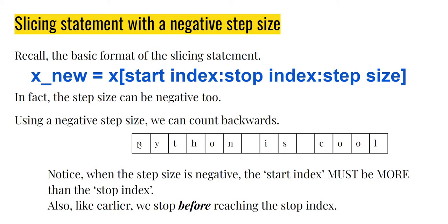The reason start must be greater than stop is because we are starting here and going backwards. For example, with indices zero through eight, if I start here I go down all the way to zero or two — no matter what, the start index must be more than the stop index. And as before, we are going to stop before actually reaching the stop index.